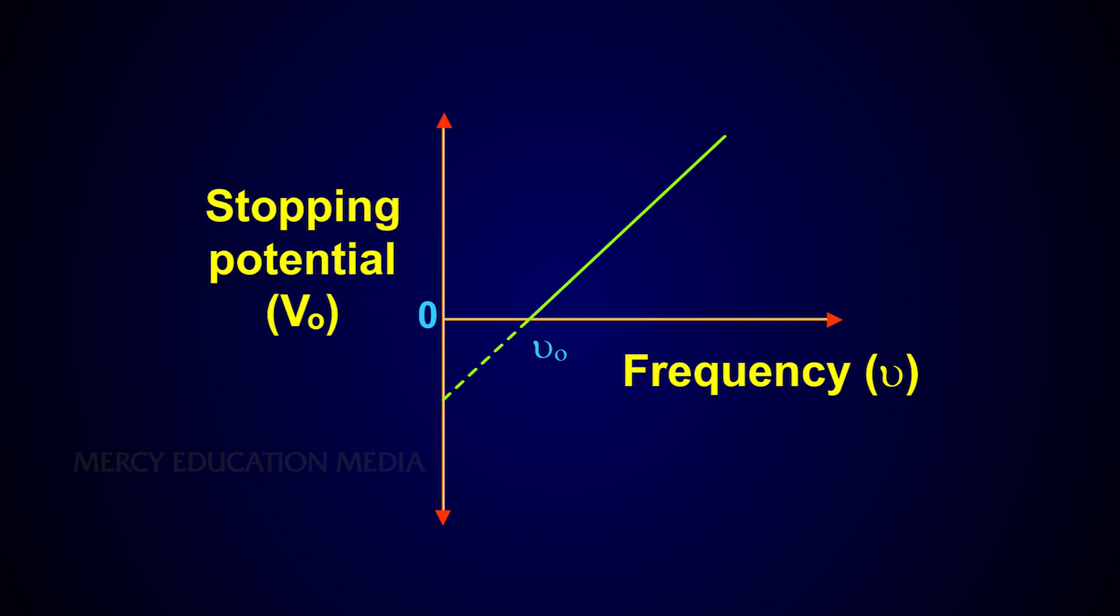This frequency is known as the threshold frequency for the photometal used. The photoelectric effect occurs above this frequency and ceases below it.